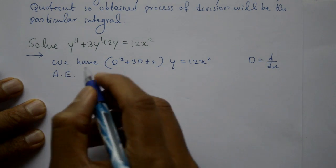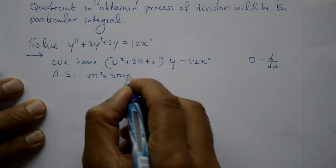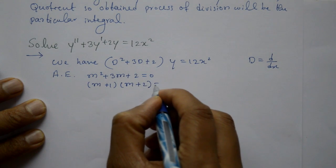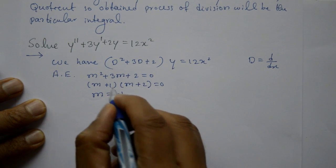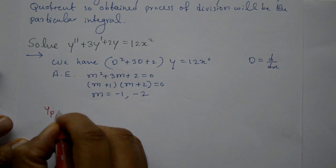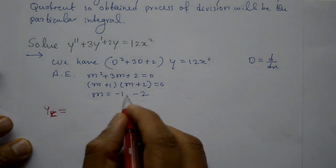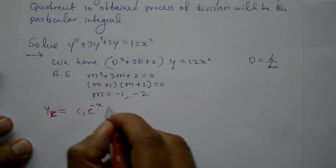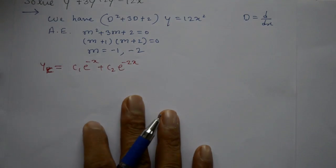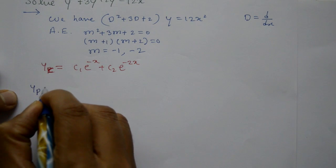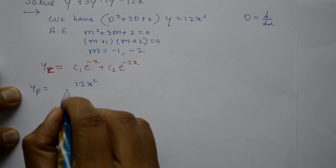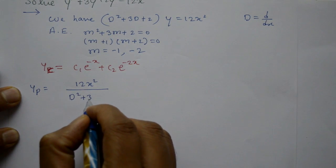The auxiliary equation is m² + 3m + 2 = 0, or (m + 1)(m + 2) = 0, giving roots m = −1 and m = −2. Since roots are different, the complementary function is yc = c₁e^(−x) + c₂e^(−2x). Now find the particular integral: yp = 12x² / (D² + 3D + 2).